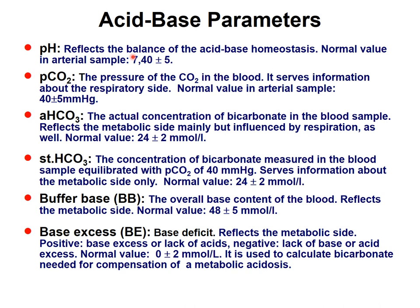The parameters of acid-base balance: pH tells us the hydrogen concentration — normal is 7.4 ± 0.05. PCO2 gives information about the partial pressure of carbon dioxide in the blood and represents the respiratory component — normally 40 ± 5 mmHg. Actual bicarbonate depends on both the metabolic and respiratory components — normal is 24 ± 2.